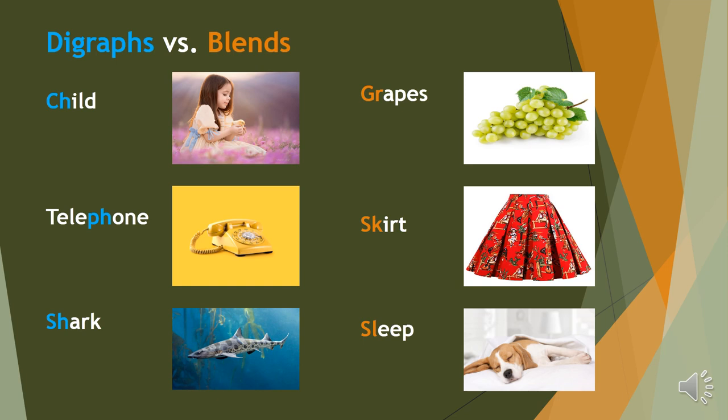For example, child C and H. If they are separated, if they are not together, they will produce a different sound. Each one of them will produce a different sound. But when they are together, they will produce a different sound from their original. Like child C and H, they will be CH, child. P and H, they will be PH, telephone. C and H, SH, shock.